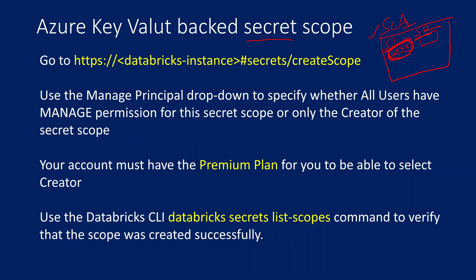So let's understand how to create a secret scope which is backed by Azure Key Vault. To do that, we need to navigate to a specific URL. Inside the Databricks workspace, once you open the URL, you need to append a portion to that URL to open a UI that will help you create a secret scope.